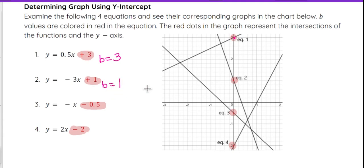Here, b is equal to 1 for y equals mx plus b. So 1 is the place where equation 2 crosses the y-axis. b equals negative 0.5, negative 1 half.